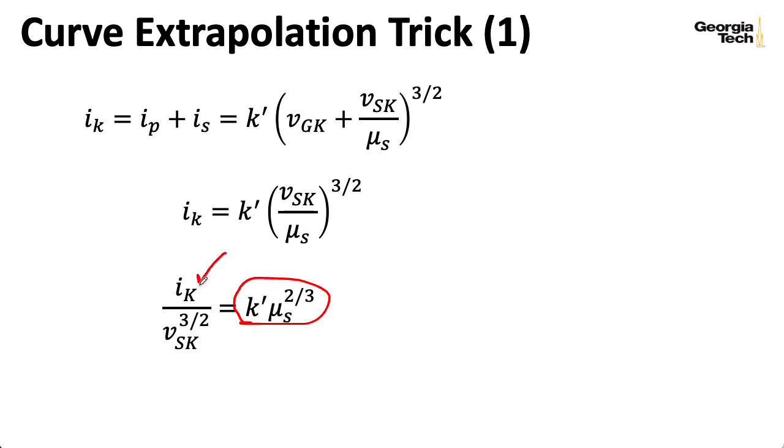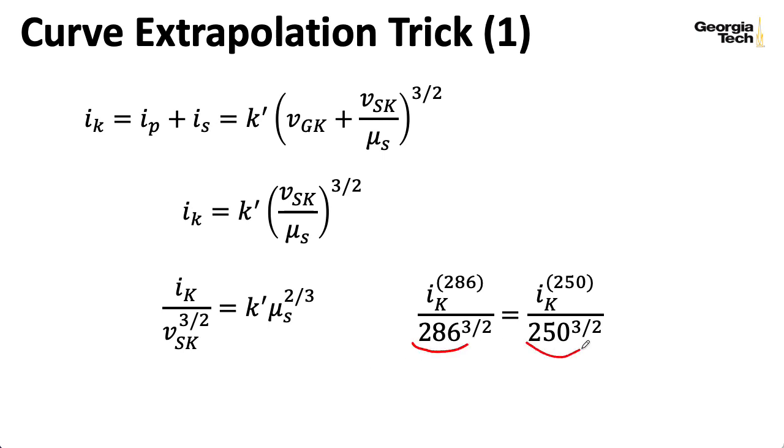I can plug in different IK's and different VSK's and equate them with each other. I can do something like this. I can plug in 286 on one side, 250 on the other side. We know what the current is supposed to be for a screen-to-cathode voltage of 250, and we can use that to find what it would be for 286 volts. I can just multiply both sides by 286 to the 3 halves power, giving me an expression that looks like this.